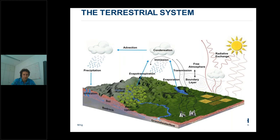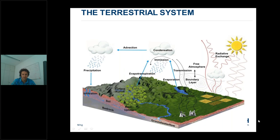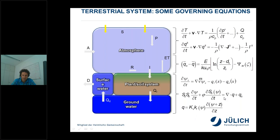A sketch illustrates the different processes we model and the equations solved in a fully coupled problem. We have equations for subsurface flow in the unsaturated zone and groundwater, equations for overland flow, and exchange of water between land and atmosphere. For the atmosphere we have a series of coupled partial differential equations. The infiltration process in the subsurface is a very nonlinear partial differential equation, and the same holds for overland flow.